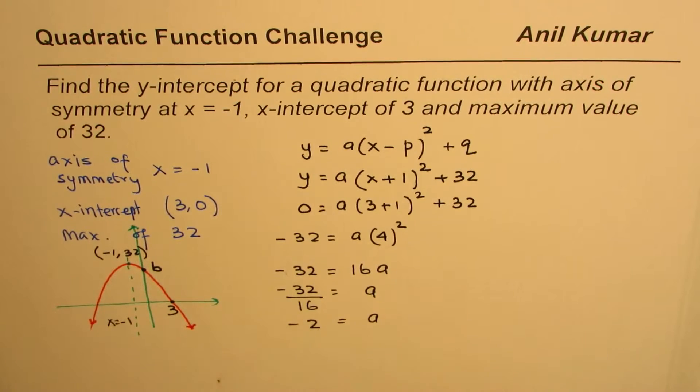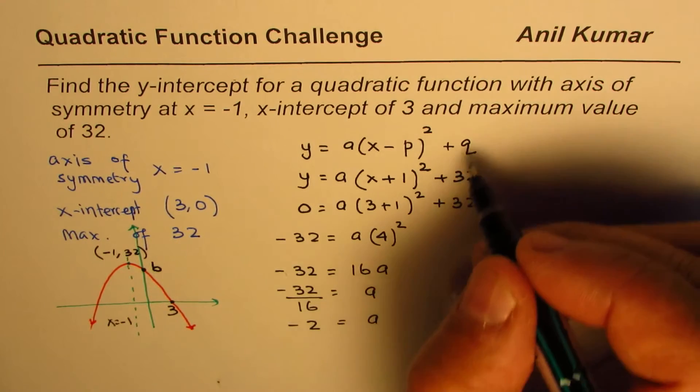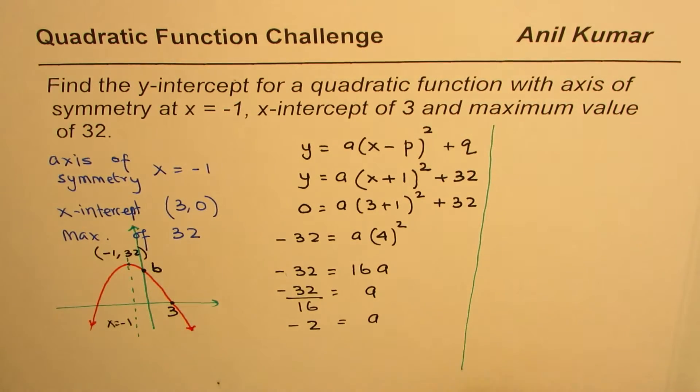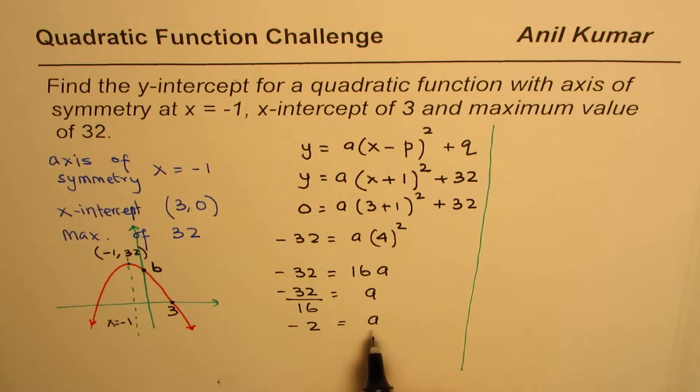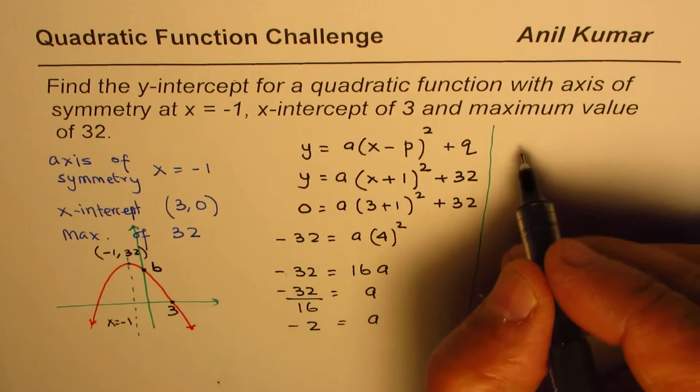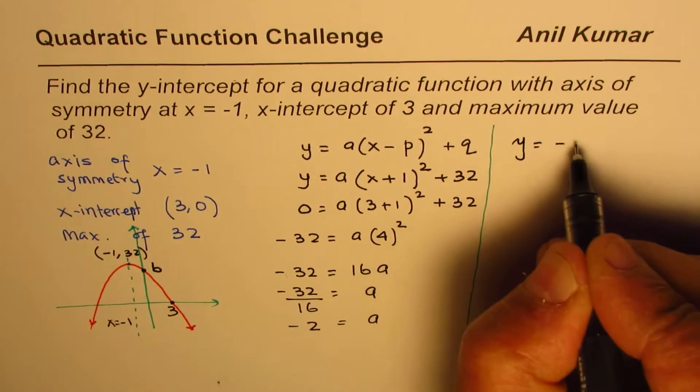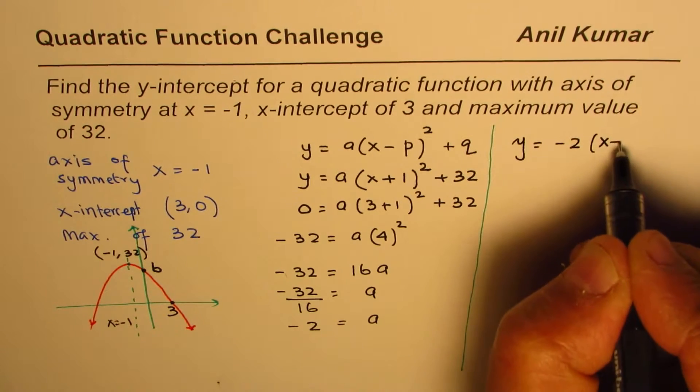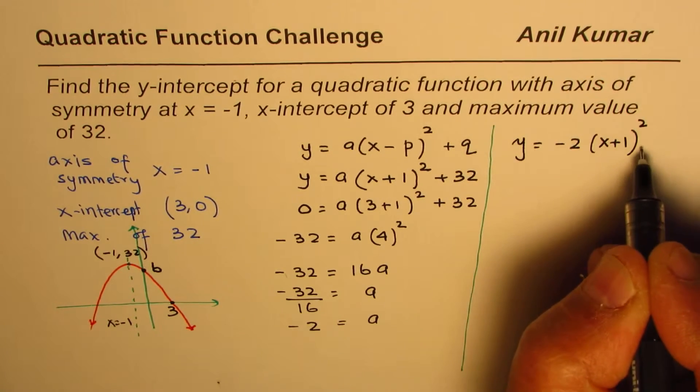Correct, so we got the equation of this parabola. Let me rewrite this equation with a as minus 2. So the equation will be y equals minus 2 (x plus 1) whole square plus 32.